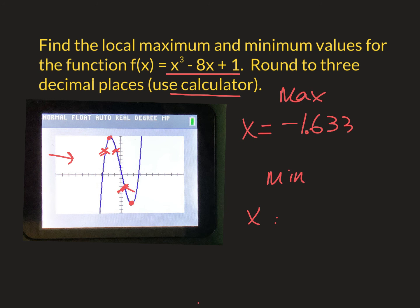Hit enter. Then it says right bound. Right bound trace to the right side. So I traced over to about somewhere right there. Hit enter again. It says guess. Hit enter one more time. And I did something wrong. Let me try that one more time.